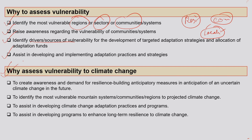Next, why assess vulnerability to climate change specifically? We need to assess it to generate awareness and demand for resilience building and anticipatory measures — promoting and helping implement various resilience-building anticipatory measures. For example, you anticipate that a particular area may have no rainfall during June or July, so accordingly you make your irrigation ready.